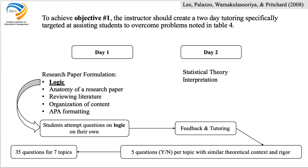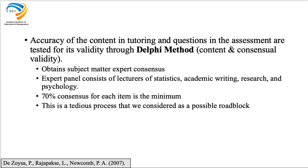For example, to improve understanding of logic, we will give students a set of questions on logic where they have to attempt it on their own. Students might not do well because they have had no prior training. Once they get it wrong, we will give feedback and tutoring. After feedback and tutoring, we will give five dichotomous questions with dichotomous options — five questions per topic with similar theoretical context and rigor, altogether forming 35 questions for the seven topics across the two days. The question is: how do you know whether these questions are good or bad?